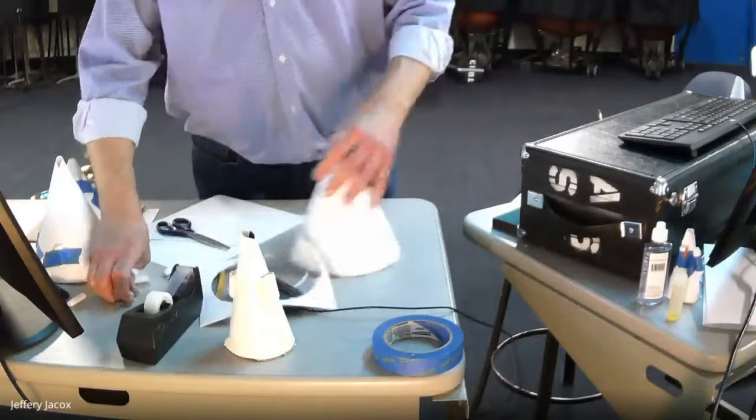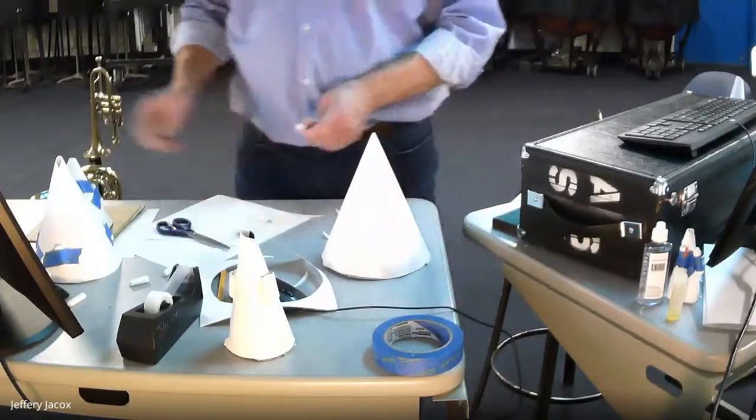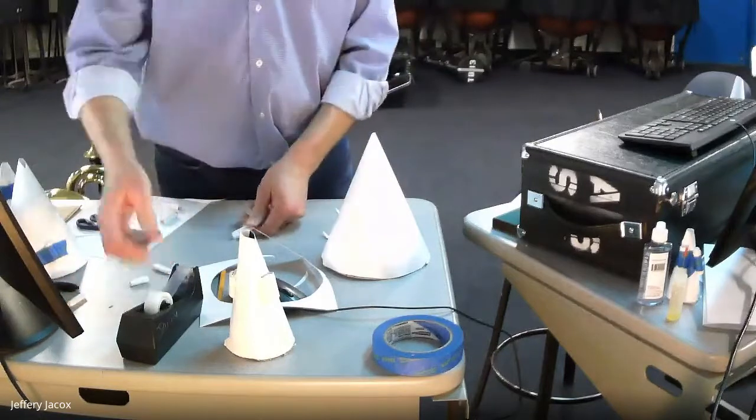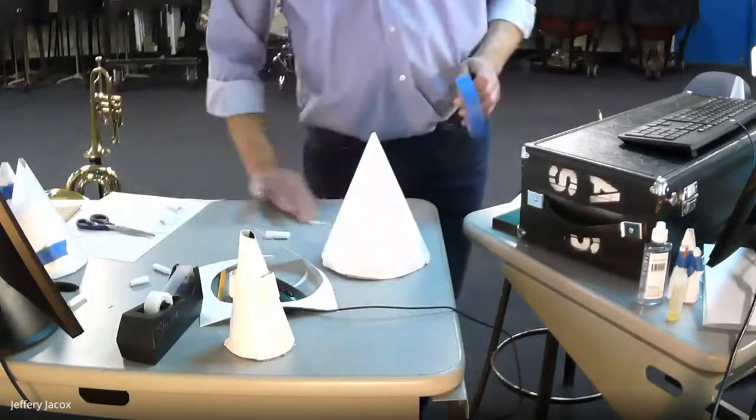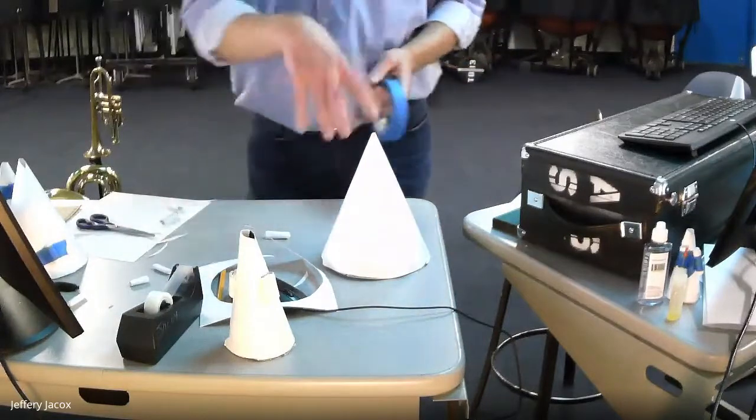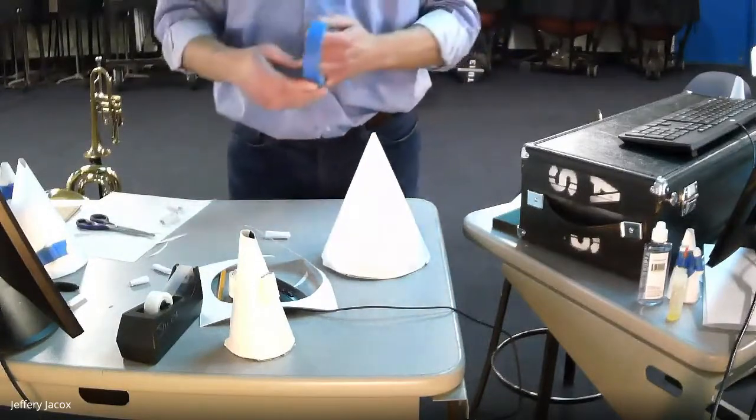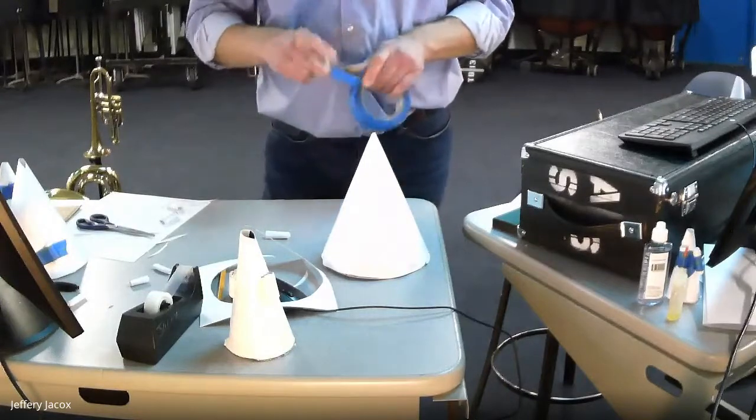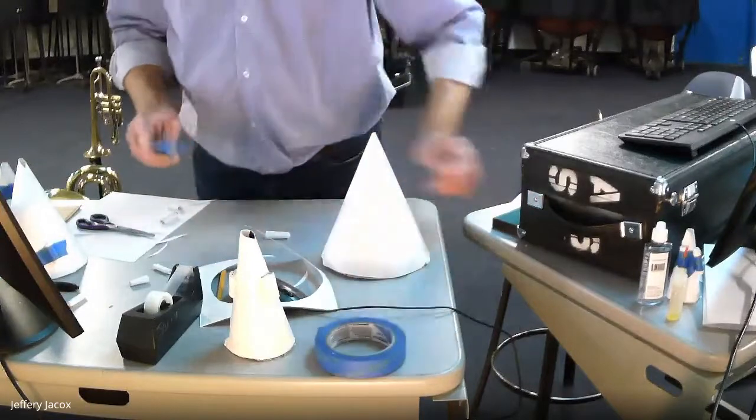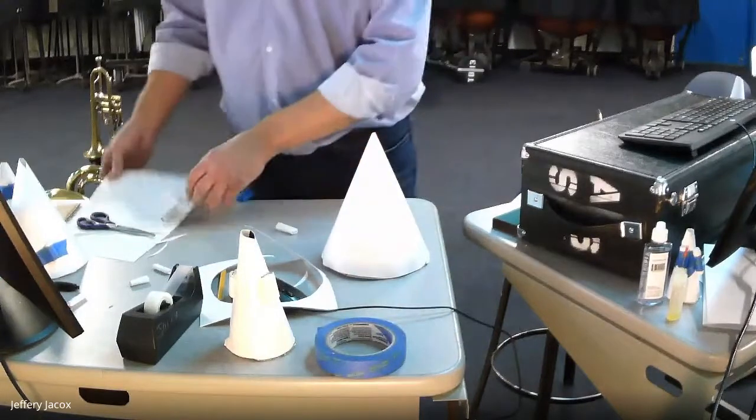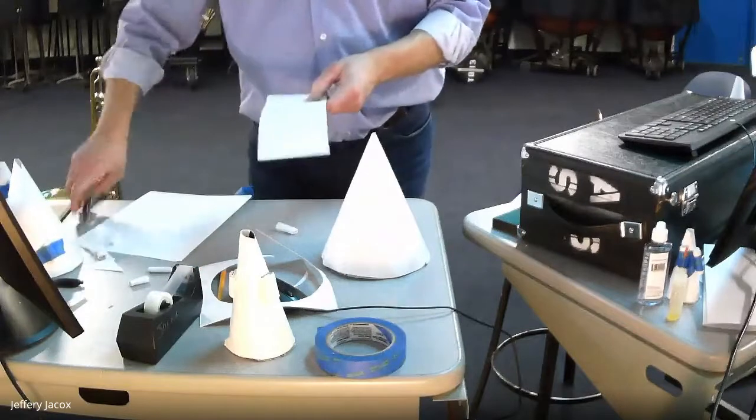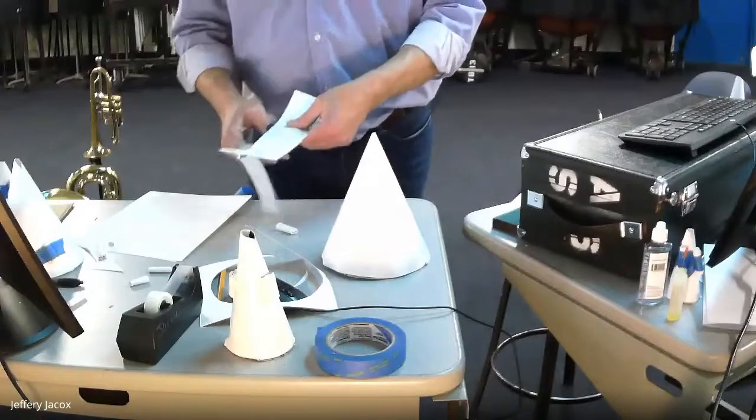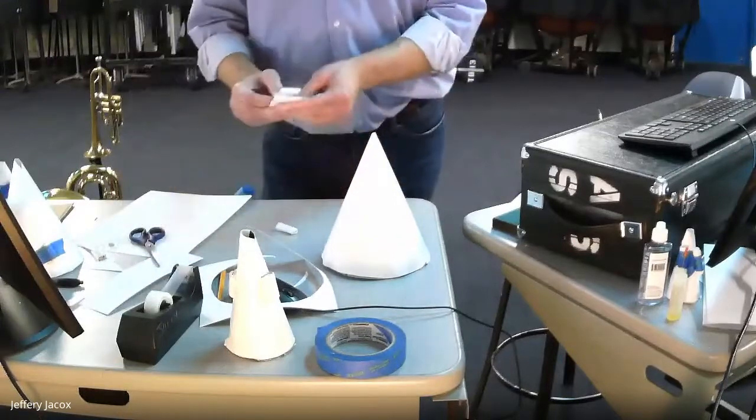I'm going to stick, as you notice in every mute there's always the corks that hold it in the bell. In this case I'm not too worried about holding it in the bell as much as just allowing air around it. If I drop this in the bell right now it's going to be very stuffy because it's plugging the bell of the instrument. So a little bit of these spacers. I'm going to take a piece of just one inch cardstock here and I fold those up to make these spacers.